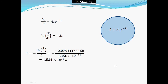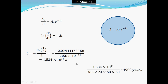Carrying on: I have the time in seconds, but let me also show you the time in years, because these are a lot of seconds. I take 1.534 × 10¹¹ seconds and divide by 365 × 24 × 60 × 60 seconds per year, and this gives me about 4,900 years.